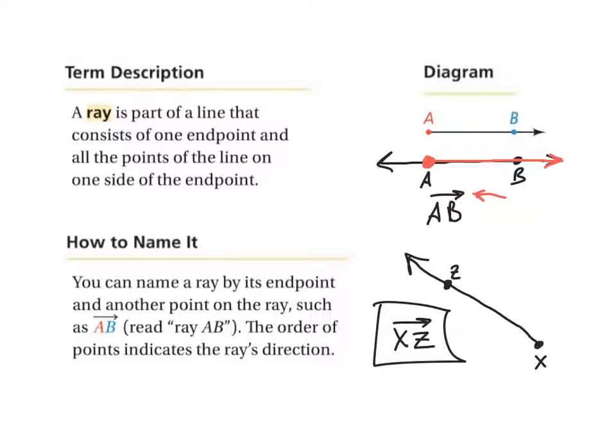By the way, if I had another point on here, Y, ray XZ, and ray XY are the exact same ray. They're the exact same ray. They start at the same end point, and they go in the exact same direction. Through the exact same points. So it's the same ray.